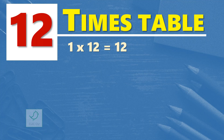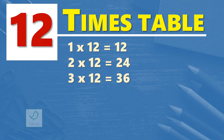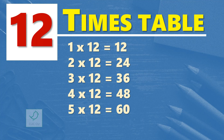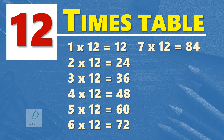1 times 12 is 12, 2 times 12 are 24, 3 times 12 are 36, 4 times 12 are 48, 5 times 12 are 60, 6 times 12 are 72, 7 times 12 are 84, 8 times 12 are 96.